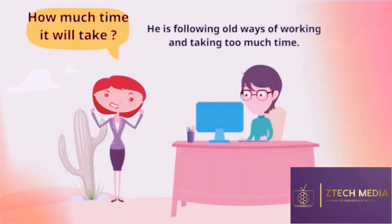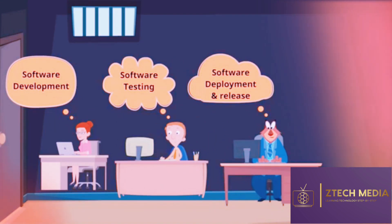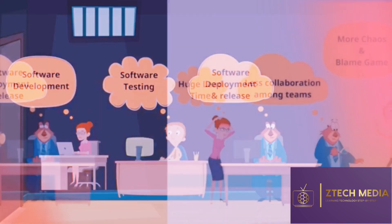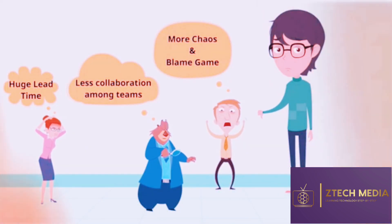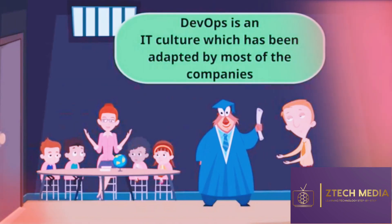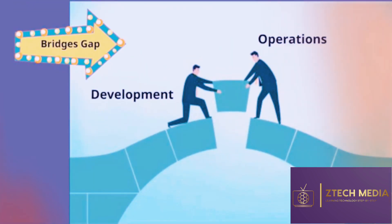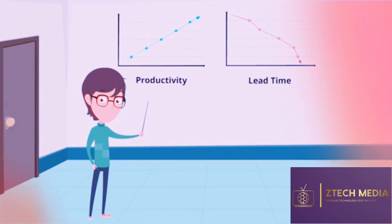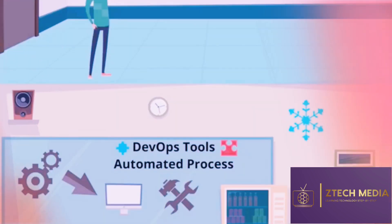In the past, we used to have old ways of working where all the software coding was done at one time — whether it was software development, software testing, or release. This led to huge time delays, less collaboration among teams, more chaos, and a huge blame game between teams. That's when DevOps came into picture, just to eliminate these gaps. DevOps is an IT culture which has been adopted by most companies today. It bridges the gap between the development team and the operations team, increasing productivity and reducing the time to develop a software.